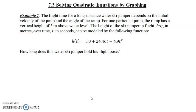Example one: the flight time for a long-distance water ski jumper depends on the initial velocity of the jump and the angle of the ramp. For one particular jump, the ramp has a vertical height of 5 meters above water level. The height of the ski jumper in flight, h(t), this is just notation, in meters, so height in meters as a function of time over time, t in seconds, can be modeled by the following function.